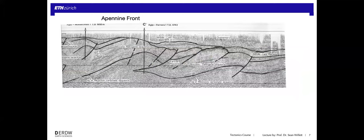There are also examples where thrust belts are completely covered by sedimentation. This is the Apenninic front — the north-vergent thrust belt from the Apennines propagating into the Po plain. Miocene sediments are deformed in a series of thrusts and folds, but these are draped by Pliocene or Quaternary sediment that completely fills the topography. The Quaternary sediments are still deformed and slightly folded in places, but clearly the main thrusts are completely draped and covered by the influx of Quaternary sediment on top of these active structures.